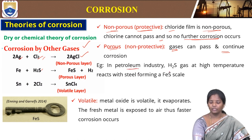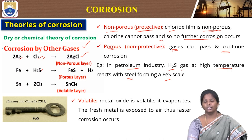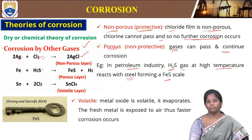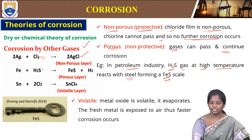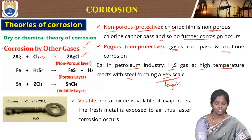For example, in the petroleum industry, hydrogen sulphide gas at high temperature reacts with steel forming iron sulphide scale. We should be careful when handling both steel and hydrogen sulphide gas together, because at high temperature it will react and form iron sulphide scale — a deposition layer. The black deposition seen on an SS key is nothing but the iron sulphide layer.